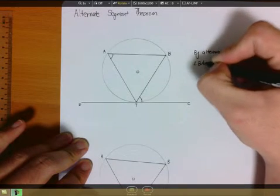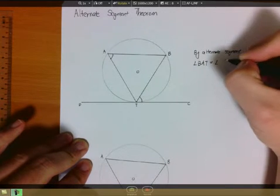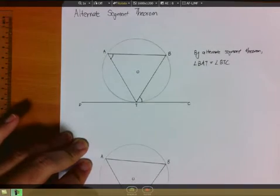Angle BAT is equals to angle BTC. And in a nutshell, that is the alternate segment theorem.